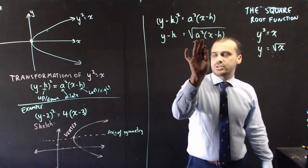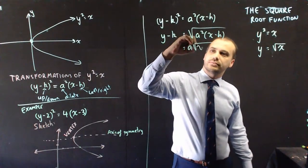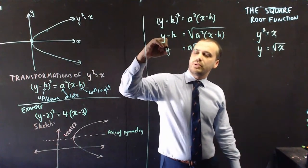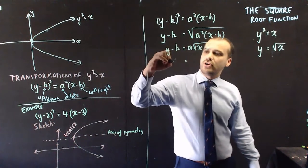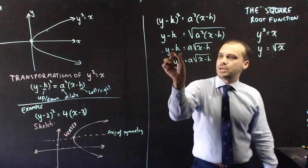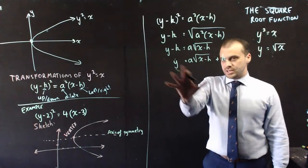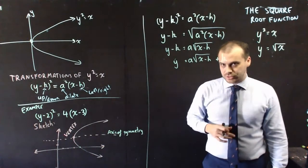Now, we can see that a squared, we can bring that on the outside of a square root, and it will just be a. Now, we get this y minus k, and finally, we get y equals a times the square root of x minus h plus k. This golden nugget here is our square root function.